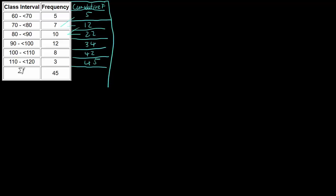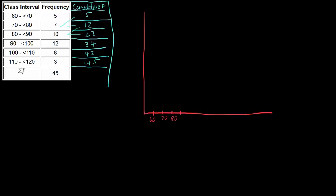Now we can start creating our ogive. The ogive is a plot of our class against our cumulative frequency, so we're going to have a vertical axis and a horizontal axis. We want to plot our class interval values from 60 to 120 on the horizontal axis: 60, 70, 80, 90, 100, 110, and 120.